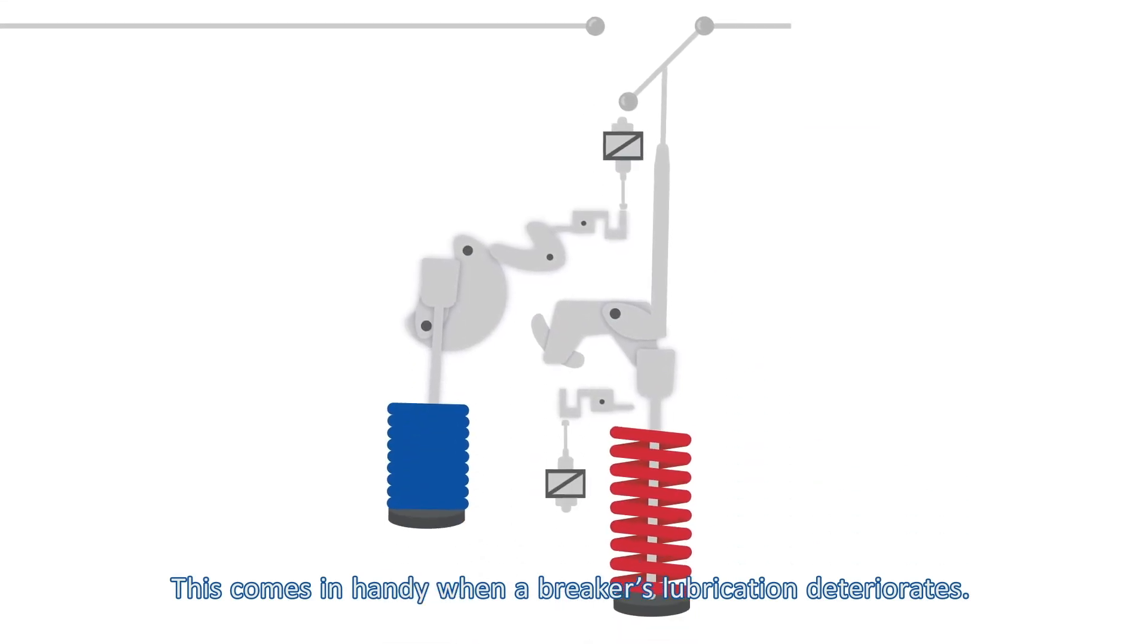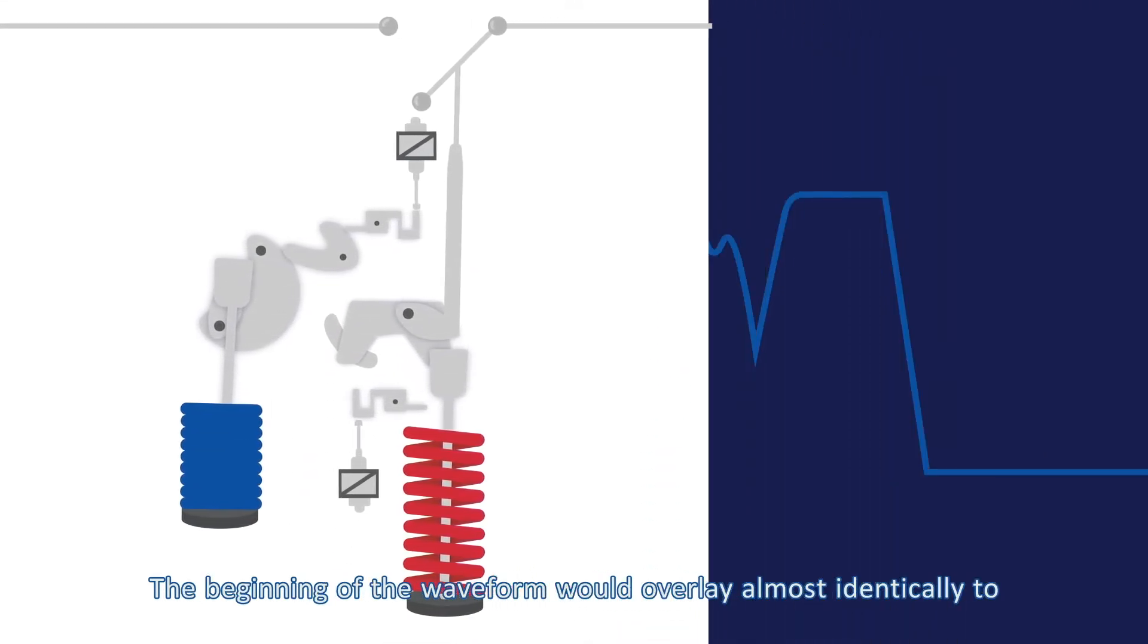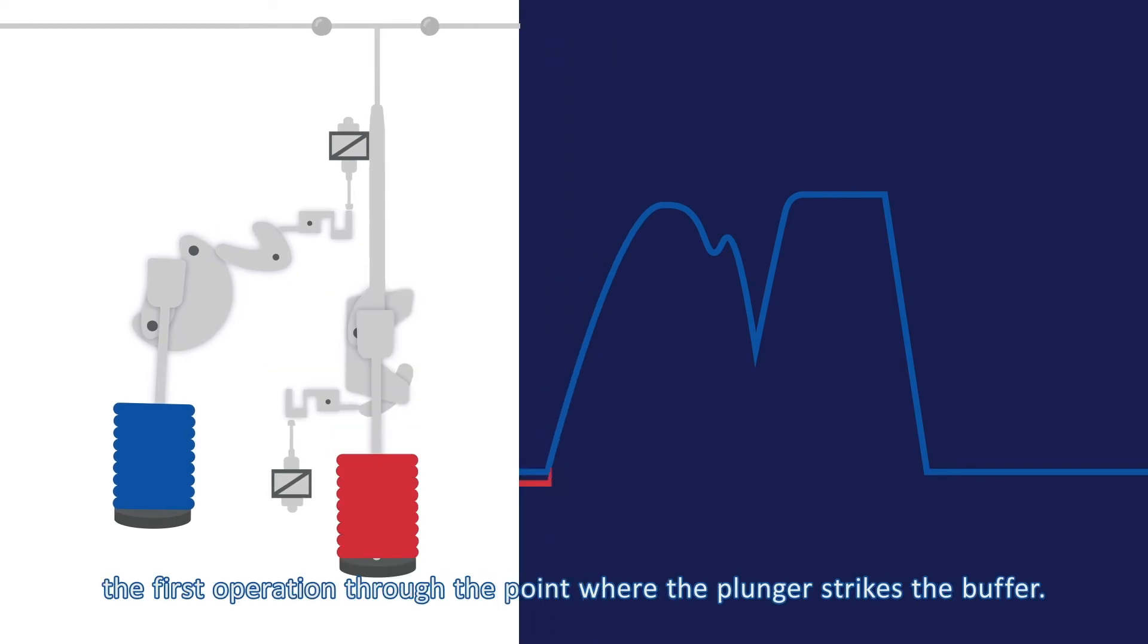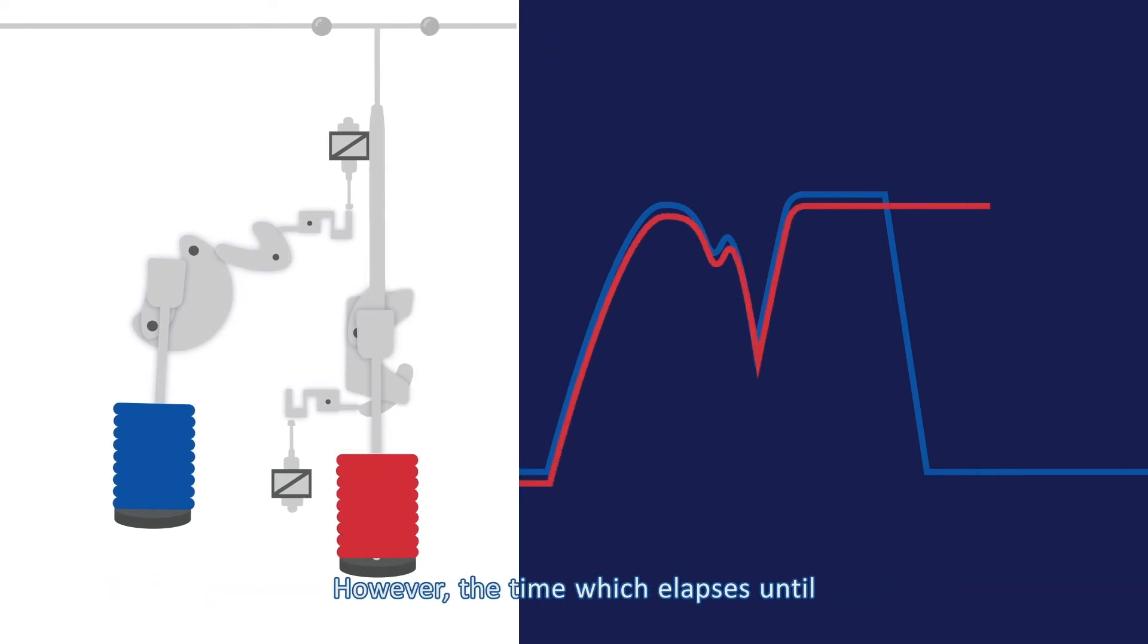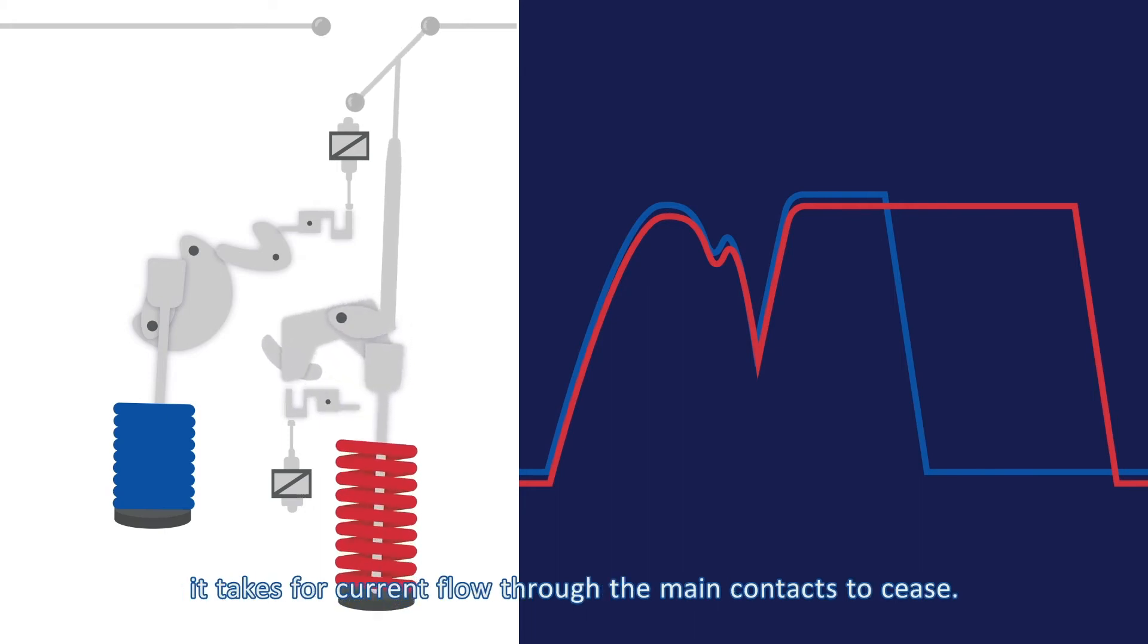This comes in handy when a breaker's lubrication deteriorates. The beginning of the waveform would overlay almost identically to the first operation through the point where the plunger strikes the buffer. However, the time which elapses until the falling edge of the coil current would increase. This increase would also be apparent in the amount of time it takes for current flow through the main contacts to cease.